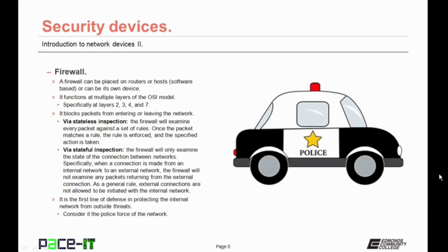Or it may use stateful inspection. This is when a firewall will only examine the state of a connection between networks. Specifically, when a connection is made from an internal network to an external network, the firewall will not examine any packets returning from the external connection — it only cares about the state of the connection. As a general rule, external connections are not allowed to be initiated with the internal network. Firewalls are the first line of defense in protecting the internal network from outside threats — you can consider the firewall to be the police force of the network.